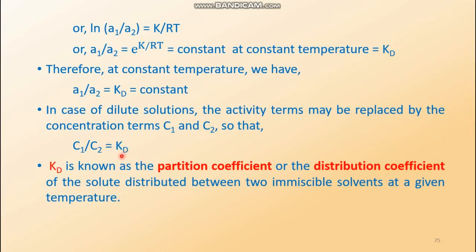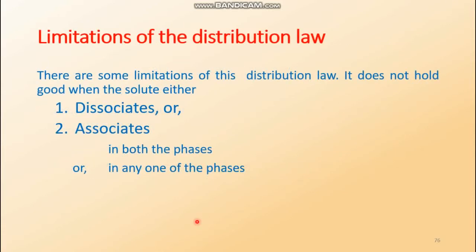Kd is a very important term in chemistry, particularly in practicals. Kd is known as the partition coefficient or distribution coefficient of the solute distributed between two immiscible solvents at a given temperature. Examples of two immiscible solvents are water and ether, water and carbon tetrachloride, and water and chloroform. A common solute soluble in both is iodine (I2). In these cases, Nernst's distribution law applies, and if obeyed, this is one of the criteria for behaving like an ideal solution.